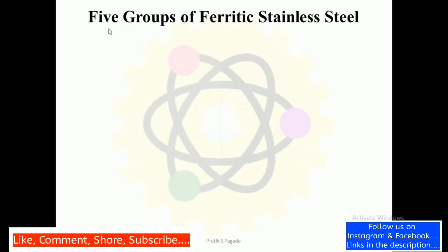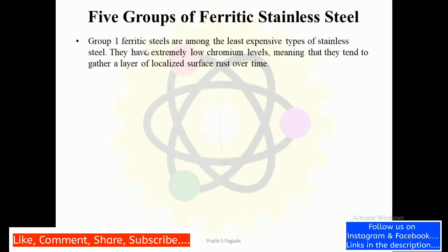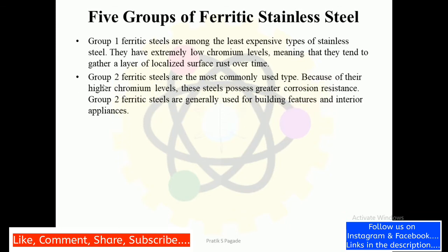There are five groups of ferritic stainless steels: Group 1, Group 2, Group 3, Group 4, and Group 5. Group 1 ferritic stainless steels are among the least expensive types of stainless steel. They have extremely low chromium levels, meaning they tend to gather a layer of localized surface rust over time. Group 2 ferritic stainless steels are the most commonly used type; because of their higher chromium levels, these steels possess greater corrosion resistance and are generally used for building features and interior appliances.